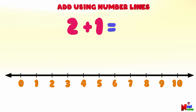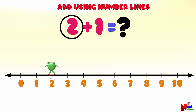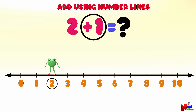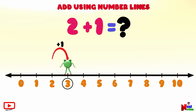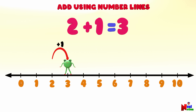Okay, let's begin. What is two plus one? Can you find number two on the number line? Here you go. To add one to number two, starting from number two, Mr. Lutu will jump one point forward to the right. Where did he land? Number three! So two plus one equals three.